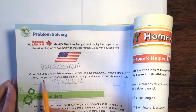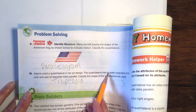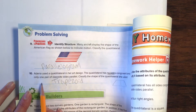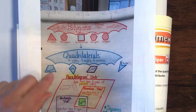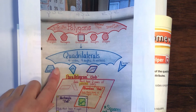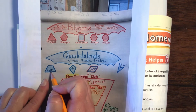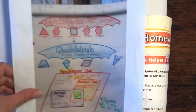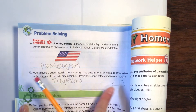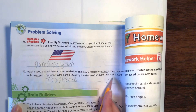Number ten. Adina used a quadrilateral in her design. The quadrilateral has no congruent sides, and only one pair of opposite sides are parallel. No congruent means they're not all the same length, and there's only one opposite pair that is parallel — that one is parallel with that one, but these ones are not. So she used a trapezoid in her art design. Draw a trapezoid — just draw something that looks like a pyramid that had the top cut off.